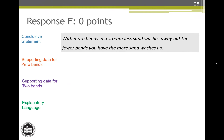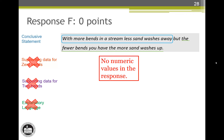Response F also earns zero score points. The first part of the first sentence answers the experimental question, so it earns the conclusive statement attribute. There is no mention of data from the table so the supporting attributes cannot be earned. Explanatory language attribute note 6 says the compound sentence can be read as two separate sentences, so we could look at the end of the first sentence — the fewer bends you have the more sand washes up — but there are no numeric values in the response, so attribute note 1 says we can't credit this. This response is a one for a zero.